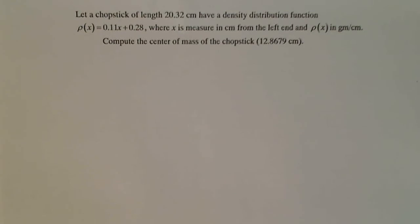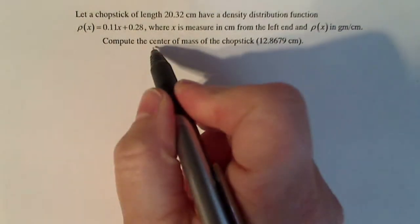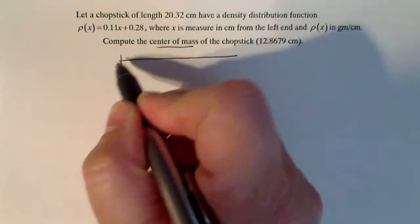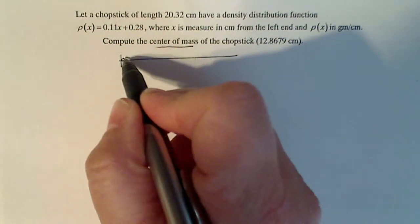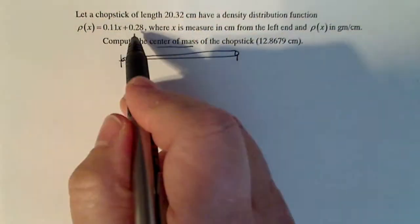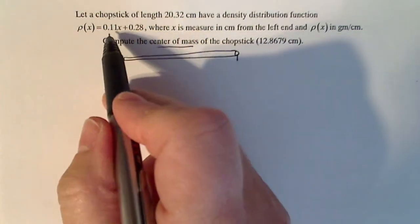Now we're going to compute the center of mass on this chopstick. If I draw my chopstick here, I'm going to put the small end over here and the bigger end over here because of the way that ρ is. ρ is an increasing function of x, a linear function with a positive slope.